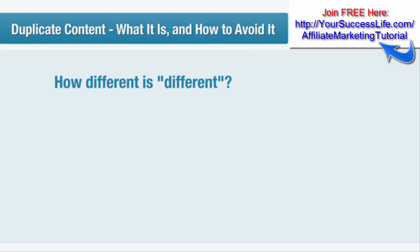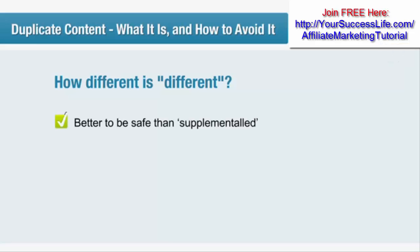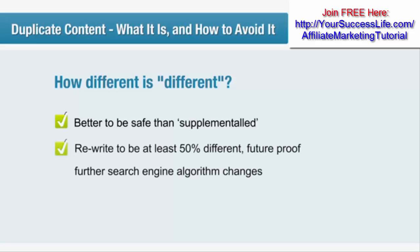So how different is different? In this situation, it's a case of better safe than supplemental. While rewriting an article to be 20% different to the original will keep the search engines happy now, we recommend rewriting to at least 50% difference. This will keep you safe from future algorithm changes, because if there's one thing you can be sure of, it's that the search engines aren't going to relax their criteria, but are only going to tighten them.